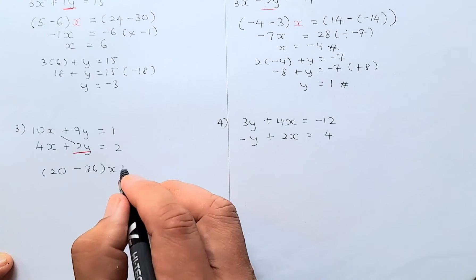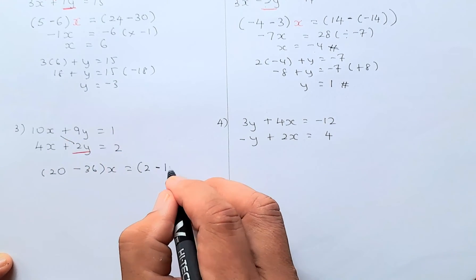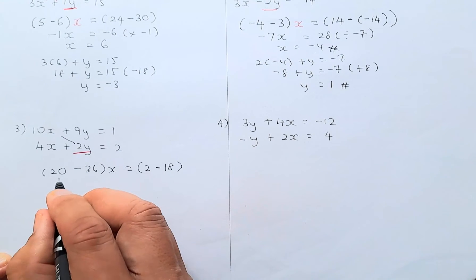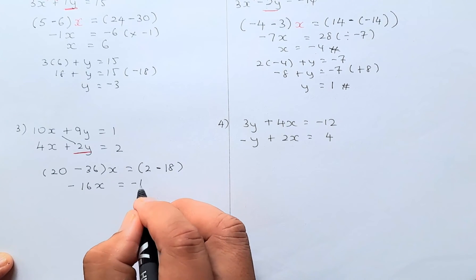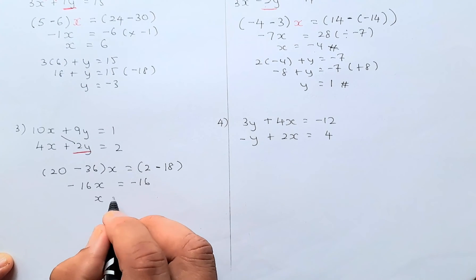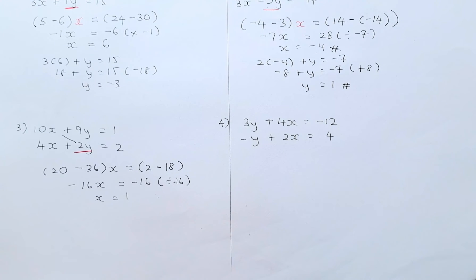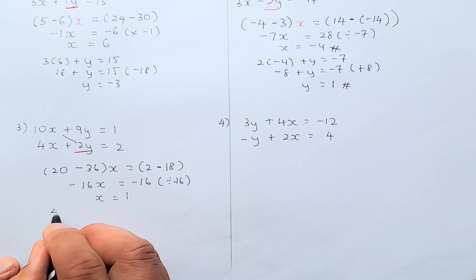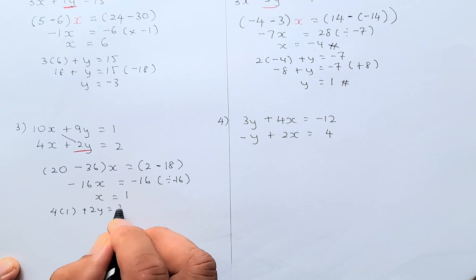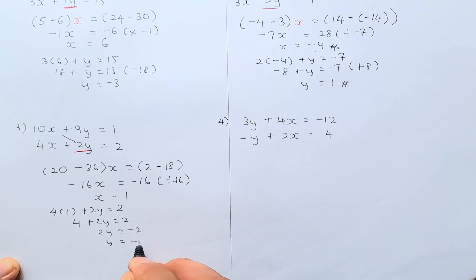Now we are going to do the other side: 2 times 1 is going to be 2, minus 9 times 2 is going to be 18. Now we're going to solve: 20 minus 36 is going to be minus 16x, equals 2 minus 18, which is minus 16. So x equals 1 because you divide by negative 16 on both sides. Then to solve for y, substitute into either one — the second equation is easier. So 4 times 1 plus 2y equals 2; 4 plus 2y equals 2, and y equals negative 1. That's the answer.